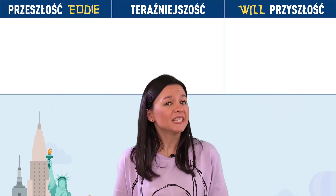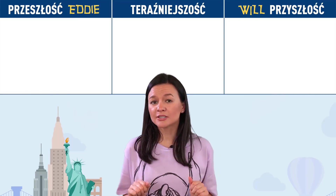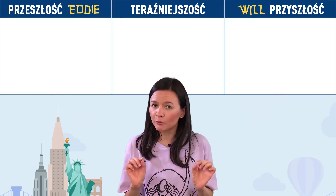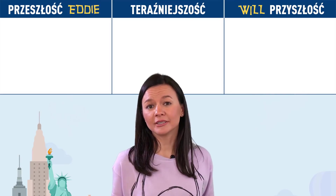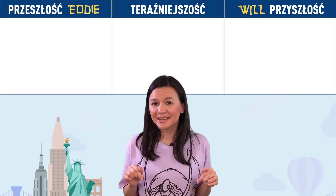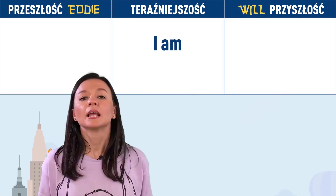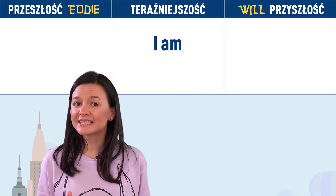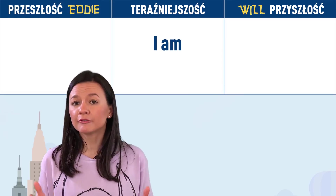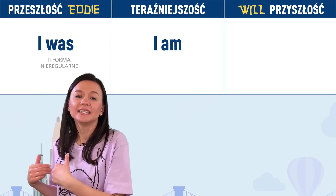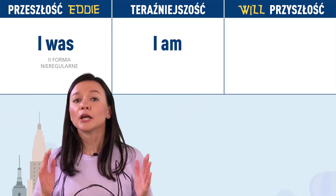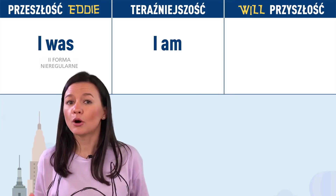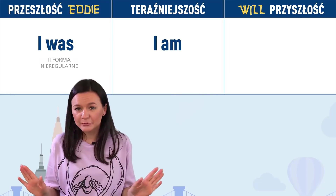W czasie następnych lekcji wyjaśnię ci, że są takie czasowniki – nazywamy je nieregularnymi – do których w czasie przeszłym nie będziemy dodawać edka. Tylko taki czasownik przybierze inną formę. Już znasz przykład takiego czasownika. Kiedy mówisz ja jestem, brzmi to I am. Ale w przeszłości czasownik być przyjmuje formę: I was – czyli ja byłem/ja byłam. Tu nie dodaliśmy edka, a mówimy o przeszłości.